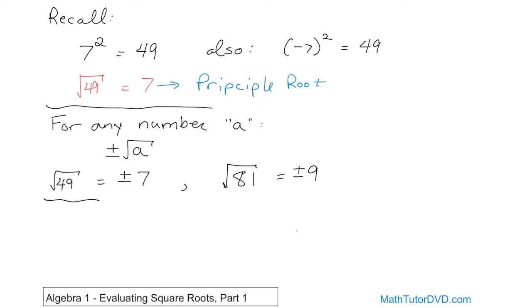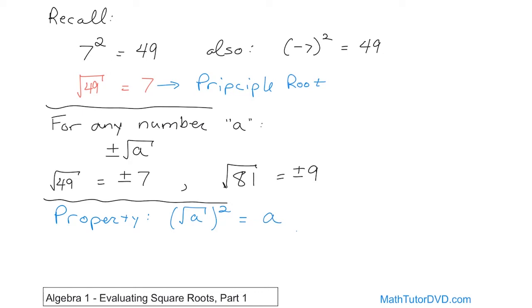We want to write down a couple more properties. In this first lesson we have to get some properties out of the way, and then when we start cranking through a ton of problems, the properties will become second nature. The first property is pretty interesting. Let's say you take the square root of a number — we're calling it A — and then you take that answer and you square it. What do you think you're going to get? You're just going to get A back. So an example: take the square root of 36 and then square the answer.